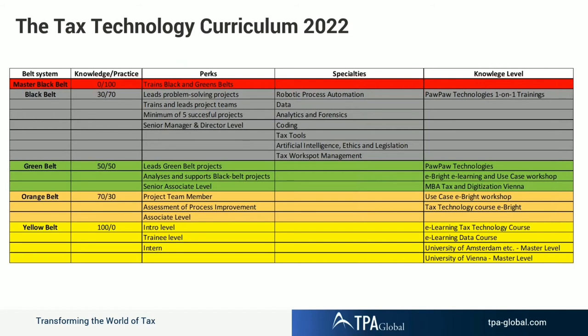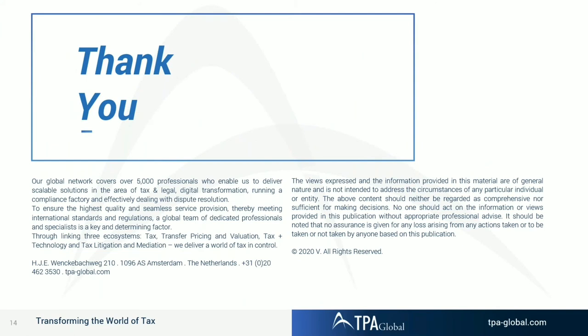We'd like to showcase a tax technology curriculum — a course we are suggesting. E-Brite, together with TPA and Signet, are all involved in ensuring and enabling tax teams to have a proper technology arm as well. This is a high-level curriculum planned across the organizations, which will be rolling out very soon and which should definitely be a key course to achieve in 2022 as tax technology becomes a norm within various organizations.